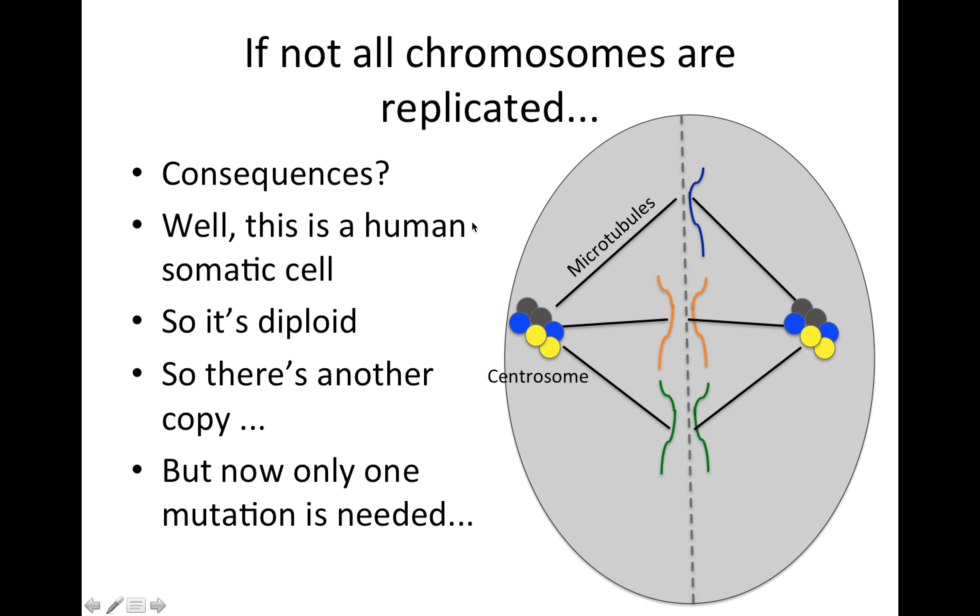So what are the consequences of this? So if we have a situation where we end up with a cell that does not have the correct complement of chromosomes, what do we expect to happen? Well, this is a human somatic cell, so though I haven't drawn it out here, if we have one copy of the blue chromosome, then somewhere else in the cell we expect to have a second copy, the other allele.